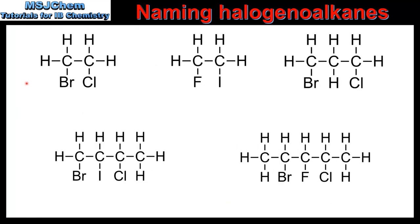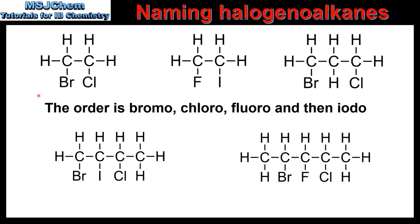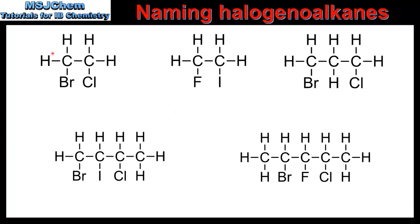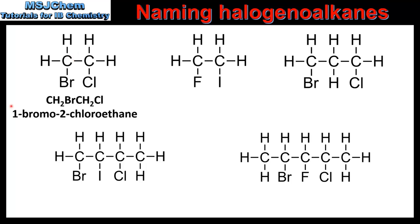Next we look at examples where there are 2 or more halogen atoms but this time the halogen atoms are different. In our first example we have 2 carbon atoms in the longest chain; one carbon atom is bonded to a bromine atom and the other to a chlorine atom. When naming these compounds we consider alphabetical order: bromine first, then chlorine, fluorine, and iodine. So carbon 1 carries the bromine atom and carbon 2 carries the chlorine atom, giving the name 1-bromo-2-chloroethane.